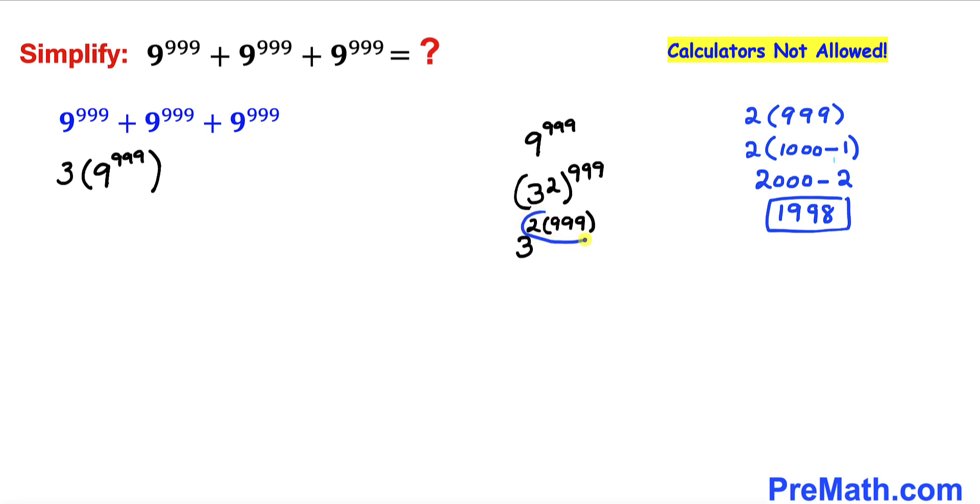Therefore I'm going to replace this 2×999 by 1998. So this could be written as 3^1998. Therefore our 9^999 has turned out to be 3^1998.